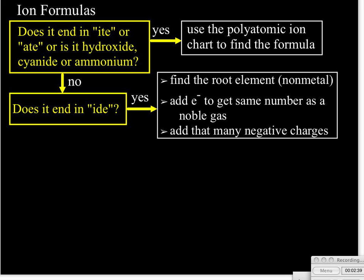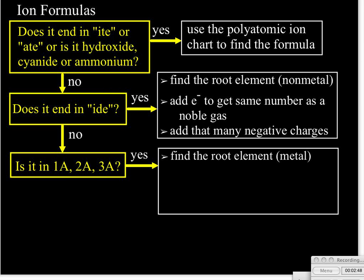If it doesn't end in -ide, next question is: is the element in groups 1A, 2A, or 3A? And if the answer is yes, the name will be the name of a metal. And then we have to figure out how many electrons do we have to subtract from that particular element to have the same number of electrons as a noble gas.